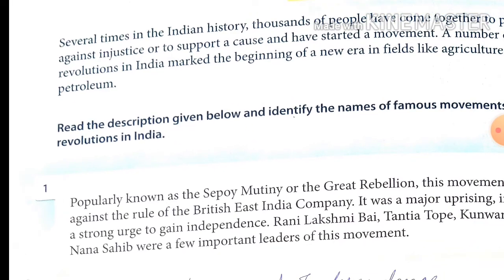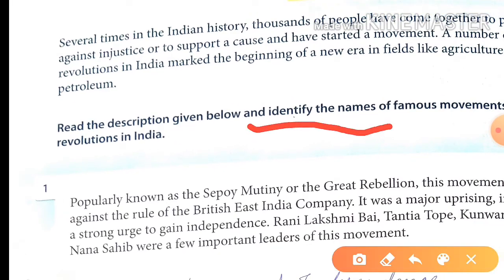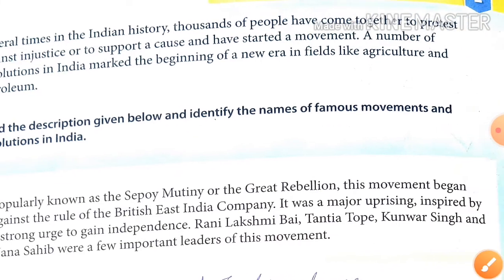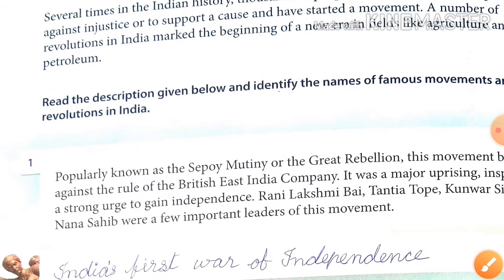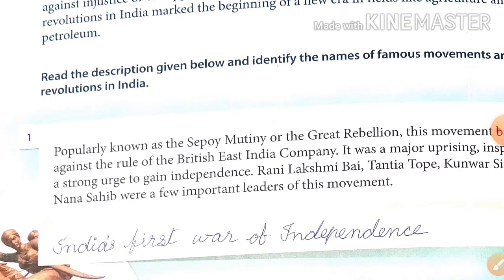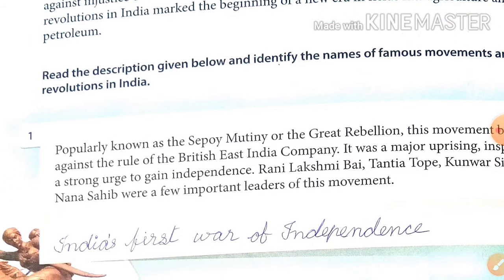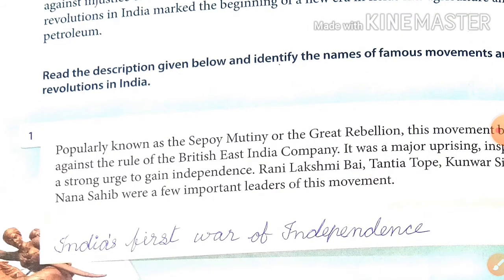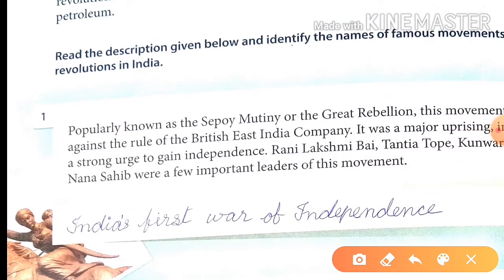Now the second is our description: Read the description given below to identify and name the famous movements and revolutions in India. Ab kya karna hai humein? Neeche diye gaye vivran ko padhna hai aur prasiddh aandolan aur krantikariyon ke naam ko pahchaanna hai. Jo movements aur revolutions hue hain India mein, unka description diya hua hai neeche. Ab humein kya karna hai — unko padhna aur unke baare mein unka naam bataana hai.